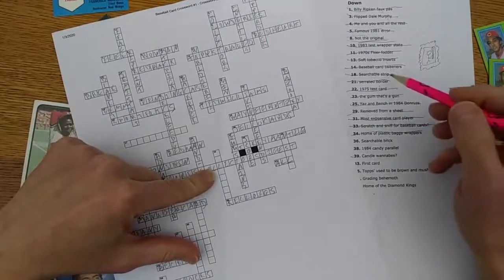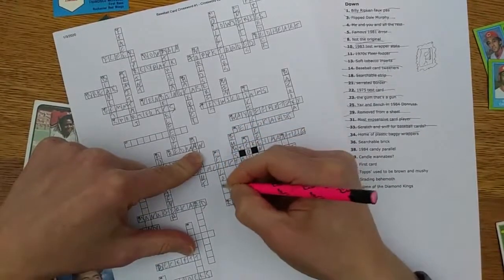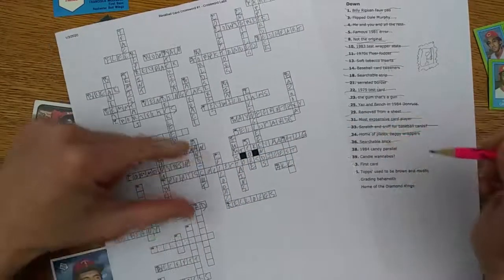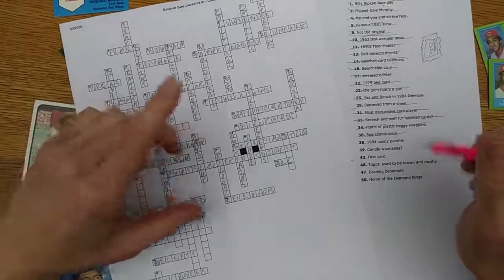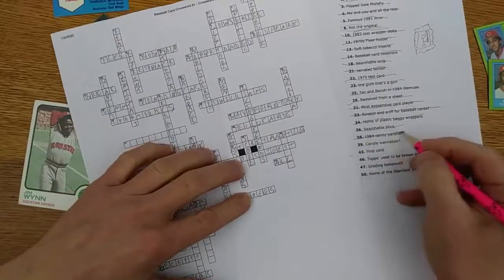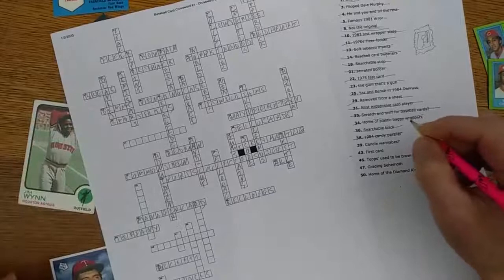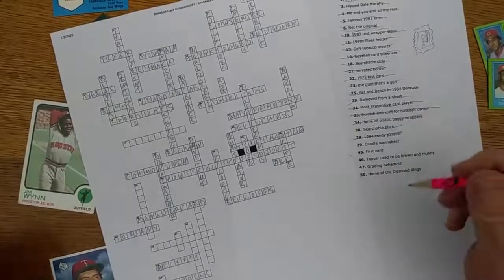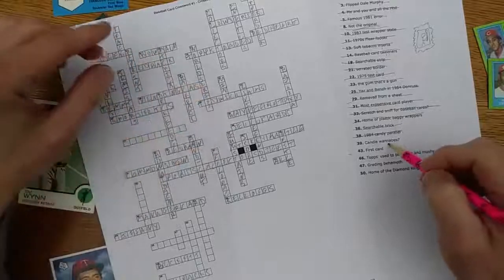Searchable brick: This is kind of like searchable strip. This would be cello packs, because again, you can see the players on both sides and you can go through the packs until you find a player showing that you want, or until you get told to leave wherever you are. 1984 candy parallel: Topps made a couple of Nestle sets. In 1984, one was an insert into candy boxes or candy packages, and then one was a complete parallel for the whole 792 card base set.